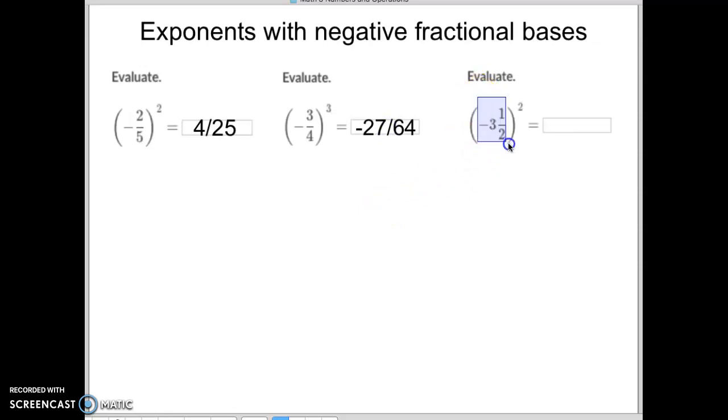Now, when you have something like this and you have a mixed number, we need to first turn this into a single fraction or an improper fraction. So the first thing you're going to do is take this three, multiply it by the two on the bottom of the denominator. Three times two is six, and then you're going to add it to the one up here. So again, three times two is six, plus one is seven. So you're going to rewrite this one as negative seven halves to the second power. Just make it into an improper fraction.